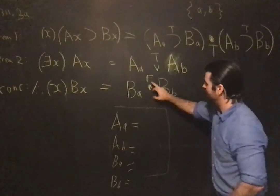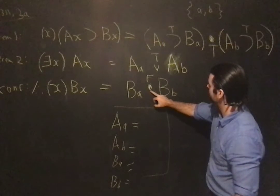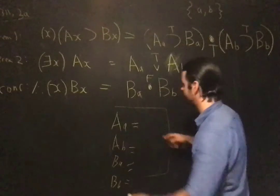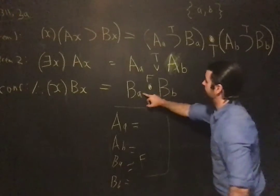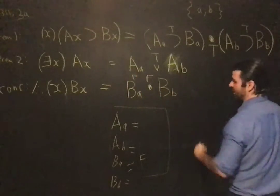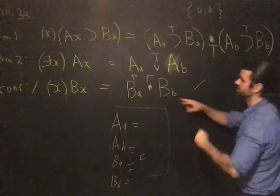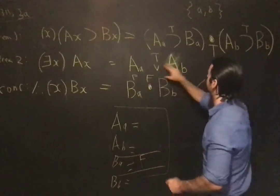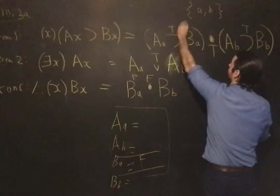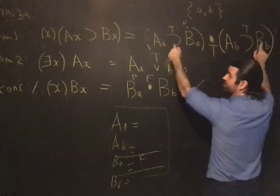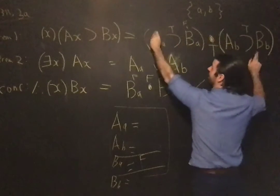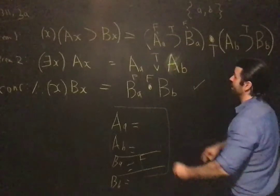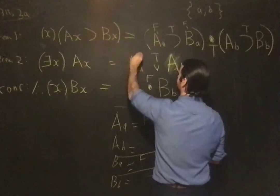One way of making the conclusion false is to make just one conjunct false — that suffices. Let's make BA false. That suffices for making the conclusion false. So we set BA false everywhere it appears. Now, since the conjunction in the first premise must be true, each conjunct must be true — so AA must be false. If AA were true, we'd have true-or-false which could be false. So AA is false.